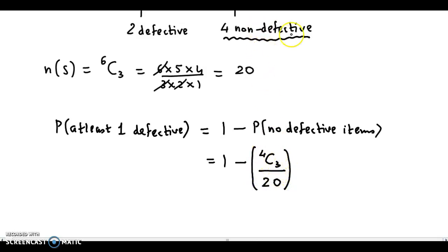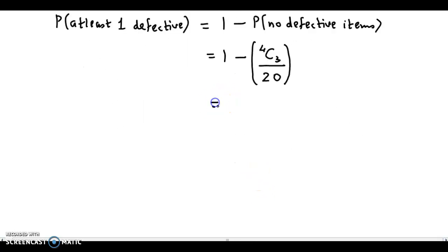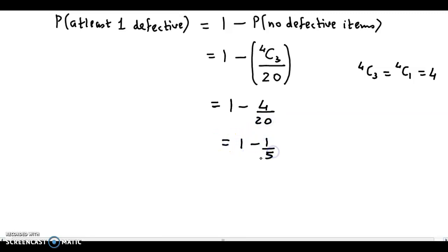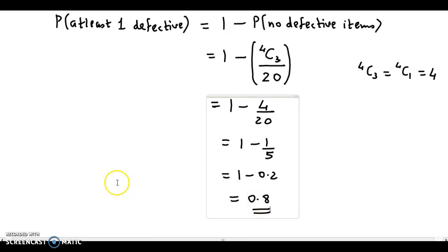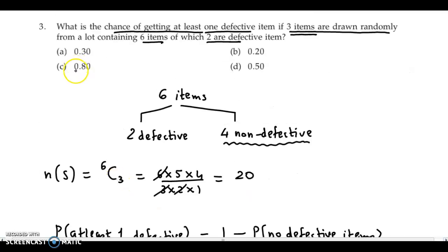Probability of no defective items means all three selected items come from non-defective ones, so it is 4C3 divided by the sample space 20. Now 4C3 is the same as 4C1, which equals 4. So this becomes 1 minus 4 by 20, which is 1 minus 1 by 5, or 1 minus 0.2. So the final answer is 0.8. Probability of at least one defective item is 0.8 — option C.